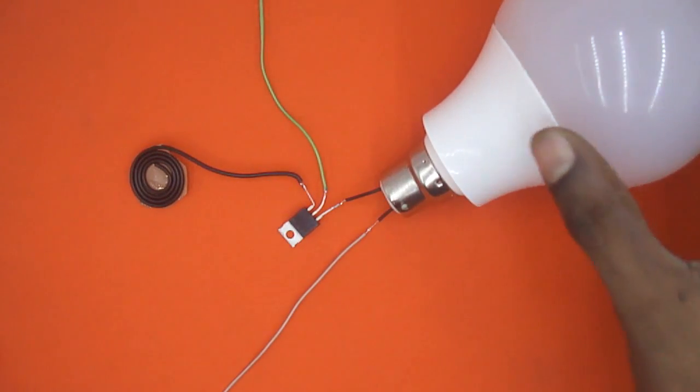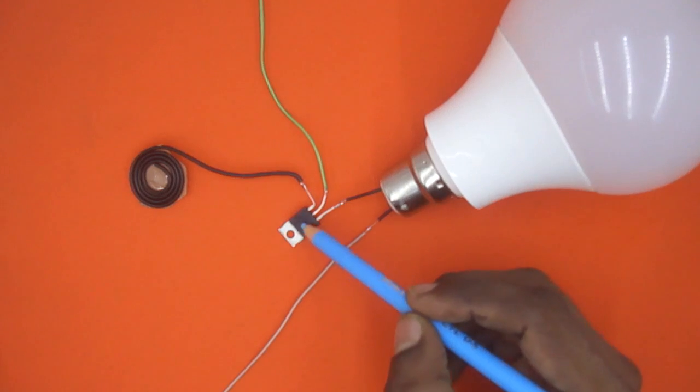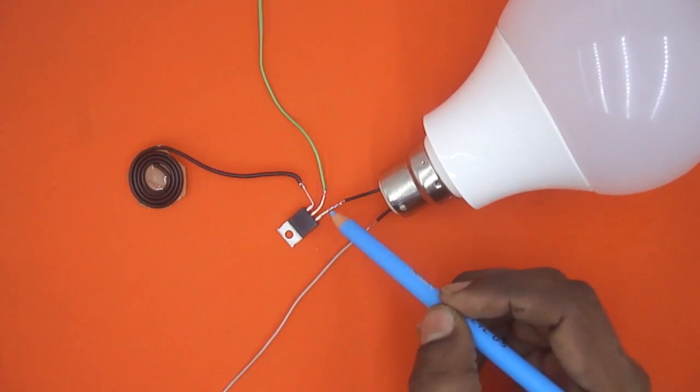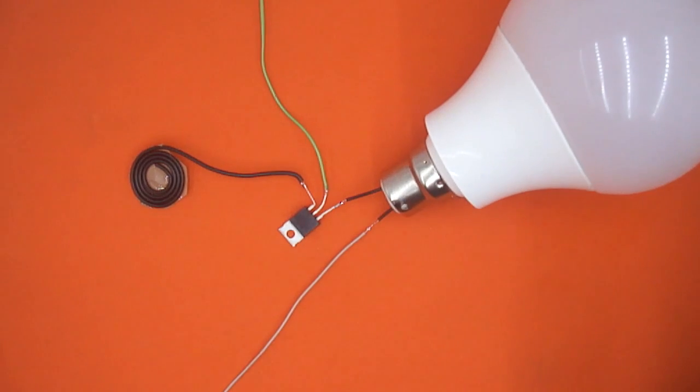Now this is the complete electronics. You must use the triac BT-136. Maybe with other triac, it will not work. Here, I have a small LED bulb and the complete electronics is very clear.